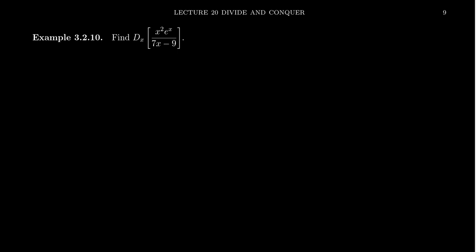So you'll notice the first thing when you look at this function, it's a quotient function. That is, we have x squared times e to the x divided by 7x minus 9. So when we calculate the derivative of this thing, we're going to have to use the quotient rule.